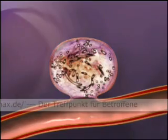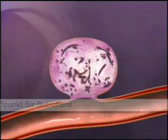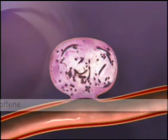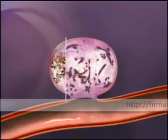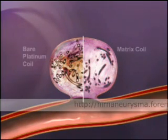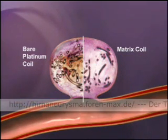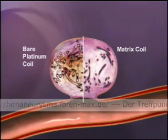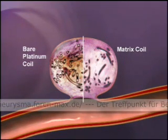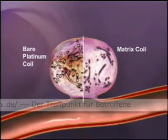As seen in the experimental aneurysms in the GLP study, after 14 days, matrix coils demonstrated a significantly thicker neck tissue and significantly more fibrocellular tissue within the aneurysm. In comparison to bare platinum coils, matrix coils accelerated removal of aneurysmal thrombus and its replacement with fibrocellular tissue. This acceleration is critical as device compaction and/or aneurysm regrowth often occurs within the first few months.